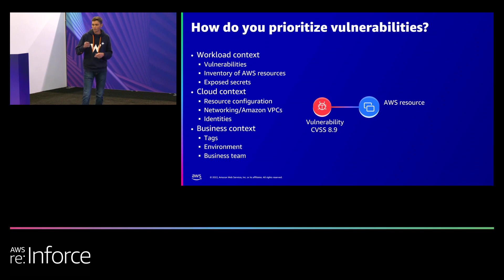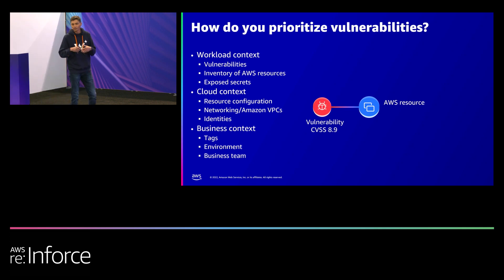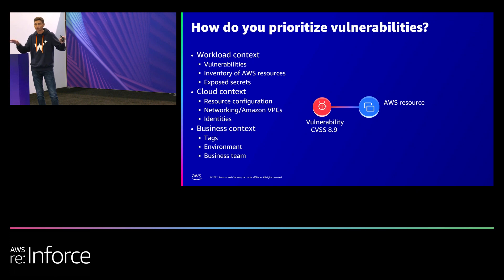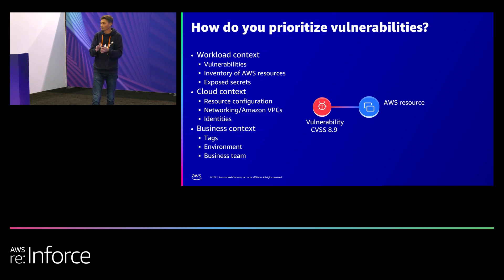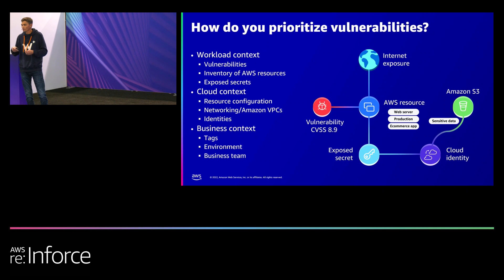So how do you prioritize vulnerabilities? The traditional way is by a CVSS score from 0 to 10, applied to a cloud resource like an EC2 instance or a container. Take Log4j — it was very exploitable across a lot of resources. I had a customer with thousands of resources affected by Log4j. How did they identify the ones with critical severity risks? We found 30 out of thousands that had things like public exposure and secrets.